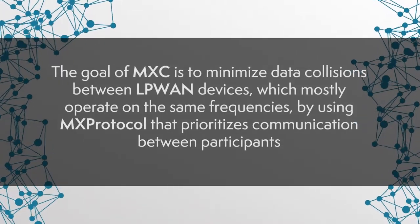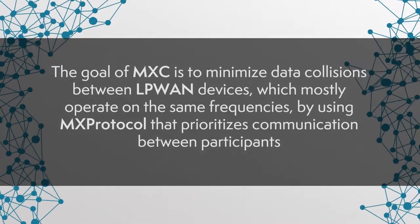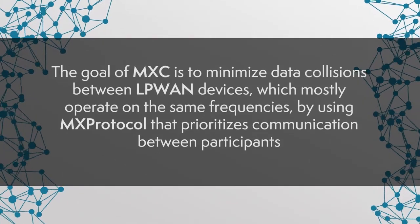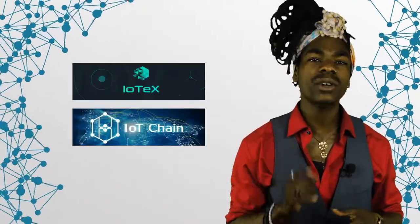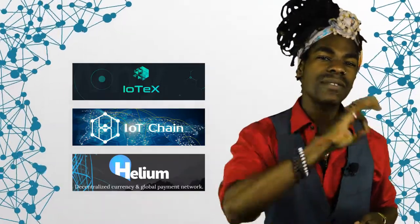Another project aiming to disrupt the IoT ecosystem is MXC or Machine Exchange Coin. The project specifically targets the Low Power Wide Access Network, or LPWAN — a type of wireless telecommunication wide area network designed to allow long-range communications among connected objects. The goal of MXC is to minimize data collisions between LPWAN devices, which mostly operate on the same frequencies, by using MX protocol that prioritizes communication between participants. In addition, MXC aims to become a data broker that takes advantage of machine-generated data to facilitate the development of AI and other complicated integrated systems. There are many more IoT projects that try to include IDOT in their designs — examples include IOTEX, IOT Chain, or Helium. Let us know in the comments if you'd like us to cover any of these projects in more detail.